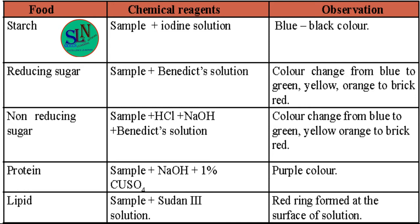For the starch food test, after placing the sample, we add iodine solution. The observation we expect is a blue-black color, which indicates the presence of starch. If a blue-black color appears, we confirm that starch is present.